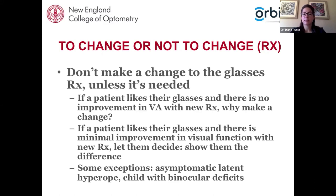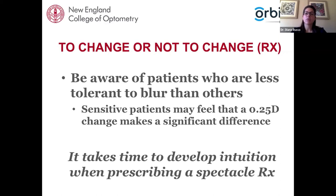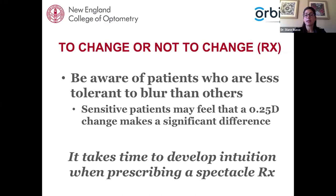You also want to be careful with patients that seem very sensitive to small prescription changes — this indicates they have a lower tolerance to blur. Any change you make, while objectively it may seem small, maybe a quarter diopter of sphere or cylinder, could be very disruptive and difficult to adapt to. Over time you develop that intuition during the refraction: if you make a quarter diopter change and the patient has a big reaction, those are indicators they may be sensitive to small changes.